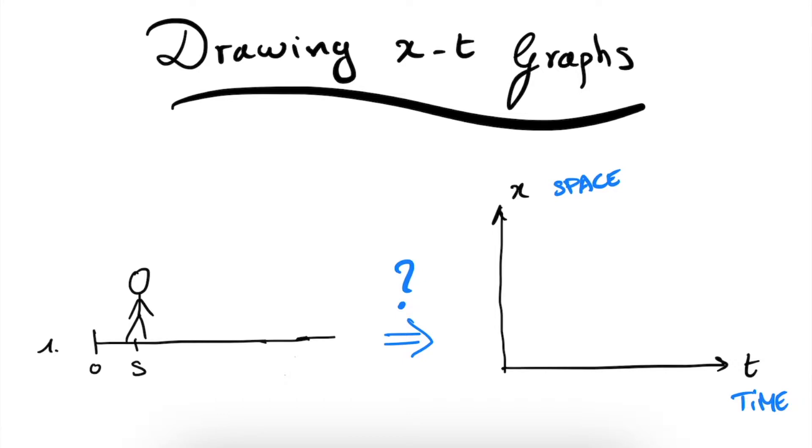For this first example, we have just someone starting at position S from start and he just remains at rest. He doesn't do anything, so he just stands there and doesn't move. So how is this translated onto an XT diagram? Well, we know that time always goes on whether we are moving or not. However, the X here or the place where we are standing does not move.